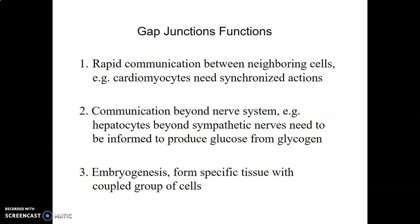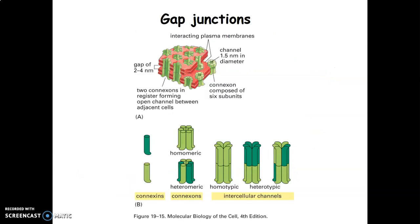GAP junctions ensure rapid communication between neighboring cells, such as cardiomyocytes, to ensure synchronized contraction of the heart. They also help with communication beyond the nervous system — for example, hepatocytes beyond sympathetic nerves need to be informed to produce glucose from glycogen. GAP junctions also help in embryogenesis by forming specific tissues with coupled groups of cells.